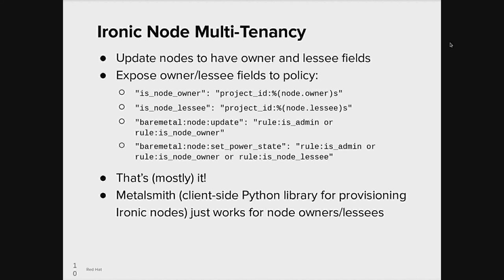Let's go into more detail about the work we did. We'll start with Ironic node multi-tenancy, which was the key feature we needed above all else. We started by talking with the upstream Ironic team about our requirements, and they were amazing at walking us through our ideas and implementation, helping us refine our spec and giving us feedback about our code. The implementation started with adding owner and lessee fields to nodes. Ironic actually already had an owner field for nodes, but it was purely informational. Next, we exposed those owner and lessee fields to policy. We added two new roles: is_node_owner and is_node_lessee.